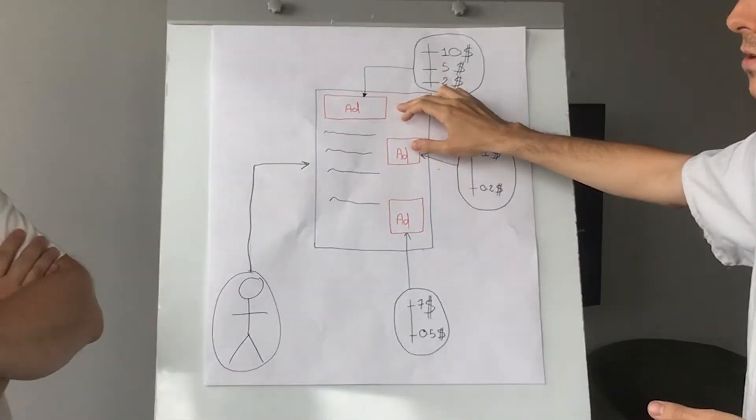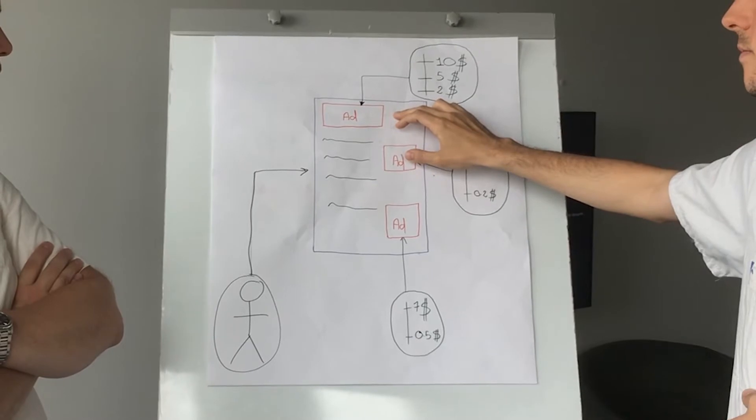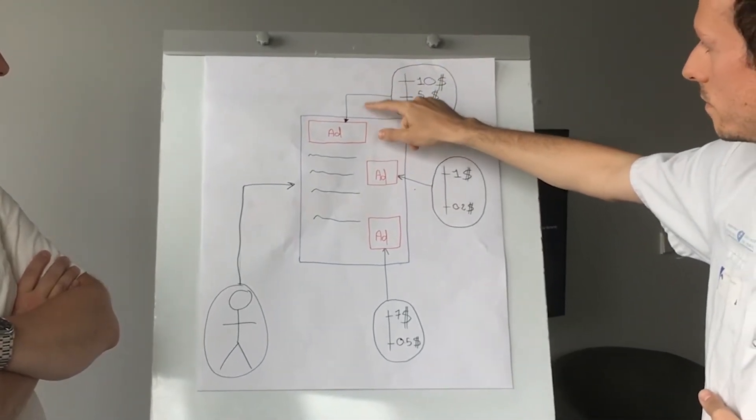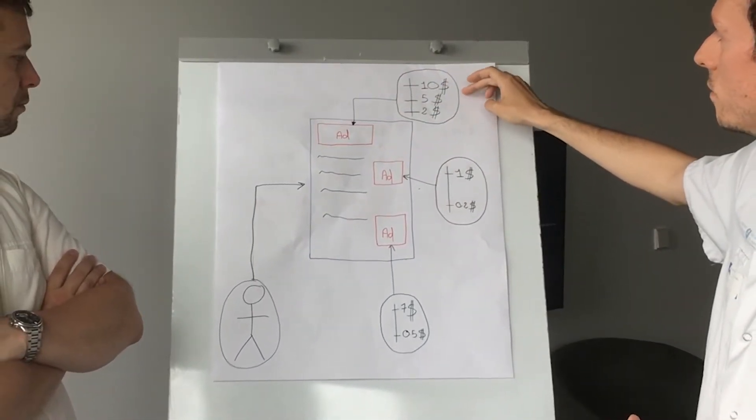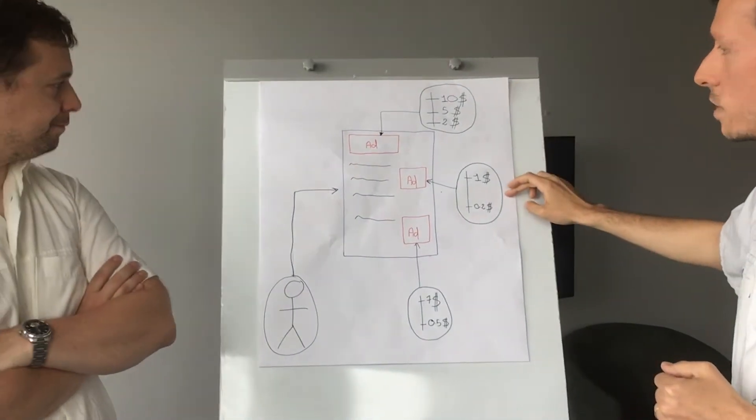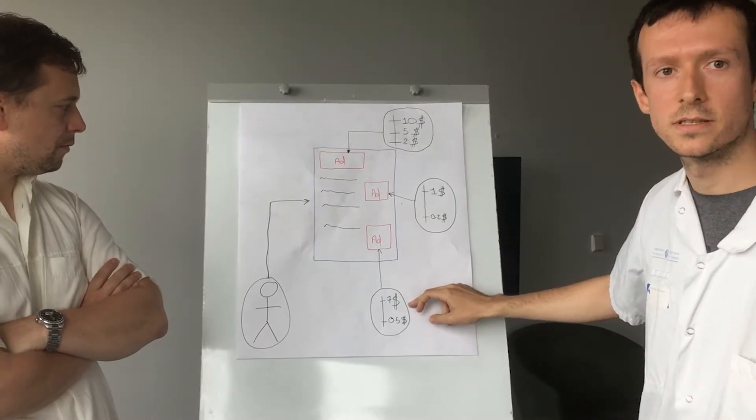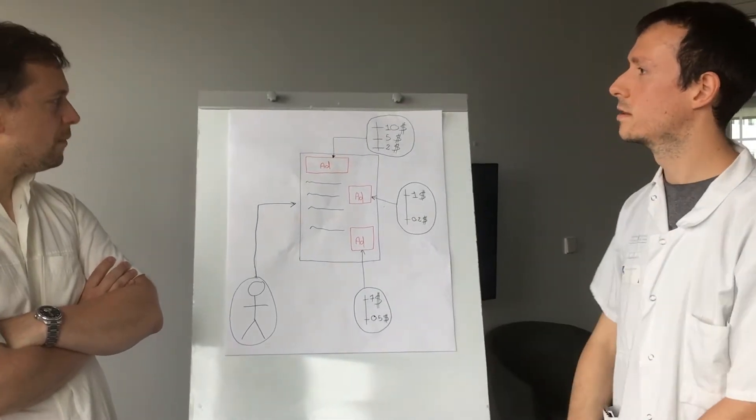Each one of these slots will be sold using second-price auction between brands wanting to display their ads. So, this first ad slot, for example, will be sold for $5, which is the second highest bid. Okay. This one will be sold for $0.20 and the third one will be sold for $0.50. Do you get me? I get it.